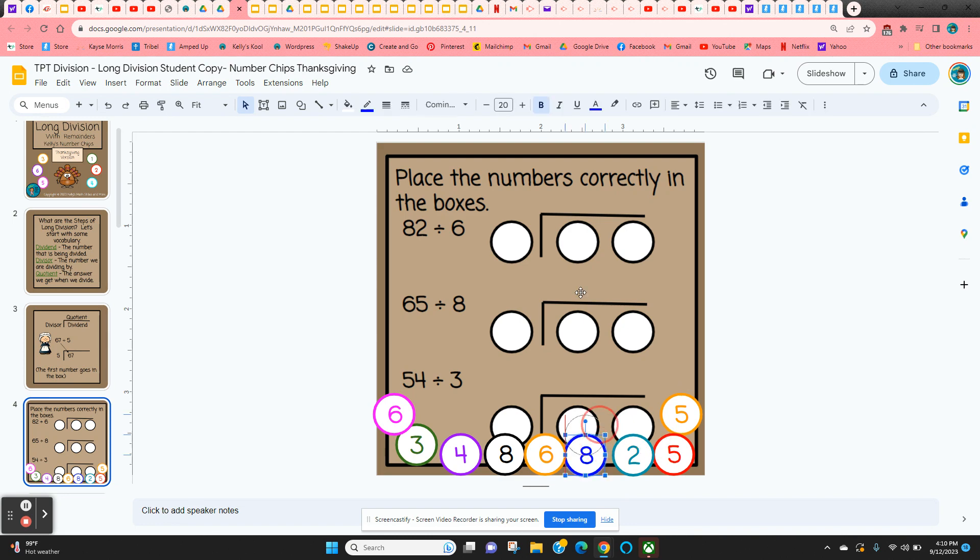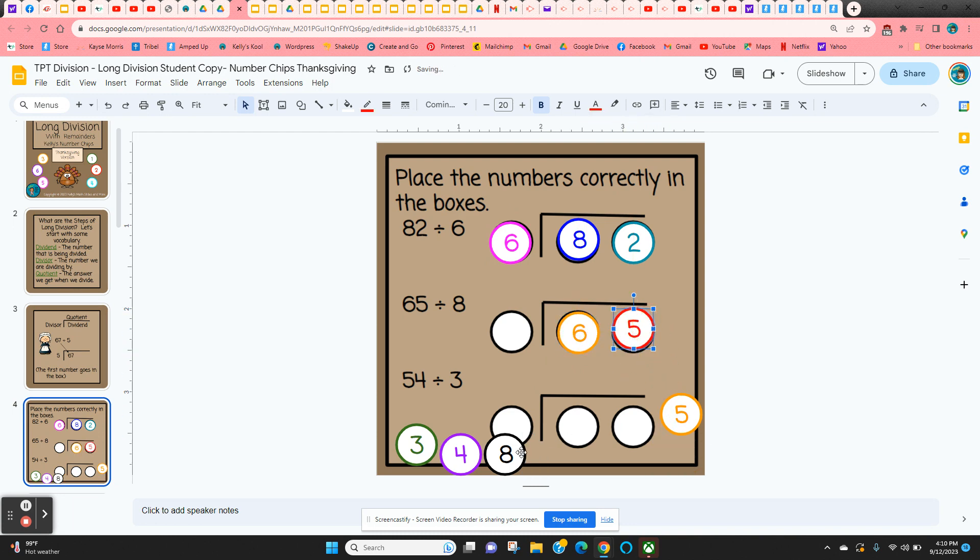So this first one's pretty simple. So we know the 82 goes in the box, the first number. And the number you're dividing goes outside the box. So they just practice doing this. They'll get used to where these numbers go. And so on.